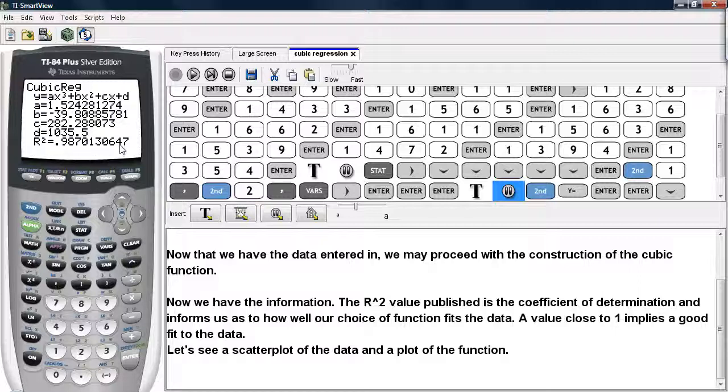Now, this R² value is basically called the coefficient of determination. It tells you pretty much how well our choice of function fits the data. An R² value that's close to 1 indicates a pretty good choice. There's not a whole lot of error between your choice of function and the actual pattern displayed in the data values.